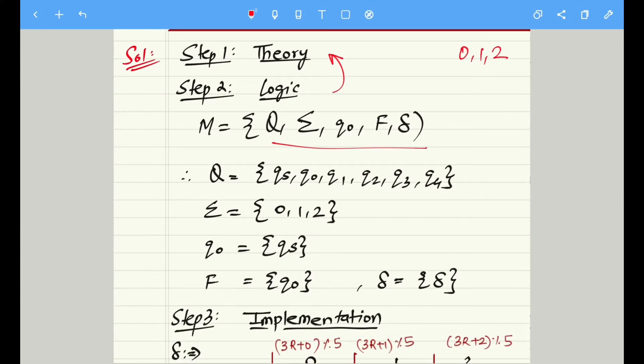Let's discuss step number two which is logic. In this case, FSM was a three-tupled machine but FA is a five-tupled machine. If we talk about FSM it consisted of I, O, N, S, but FA consists of these five tuples.